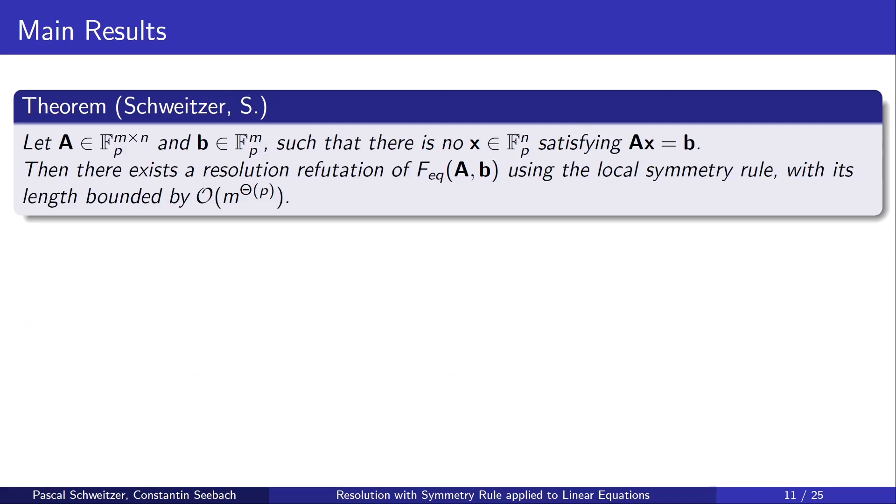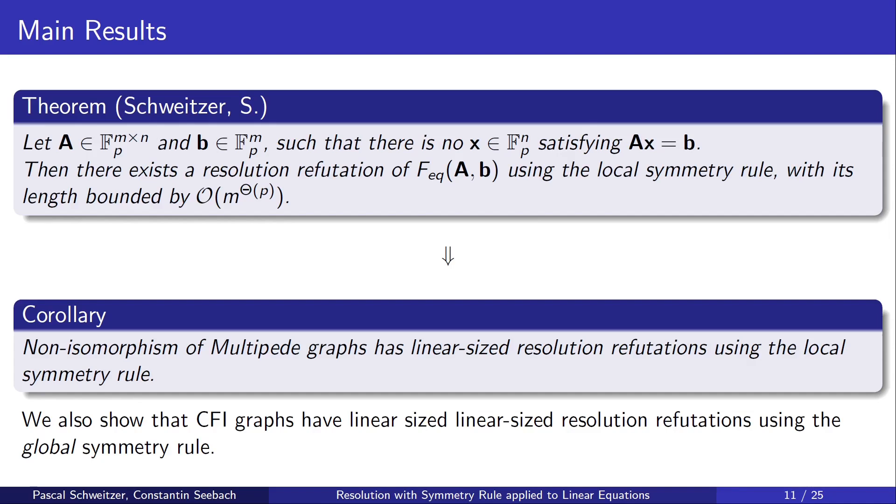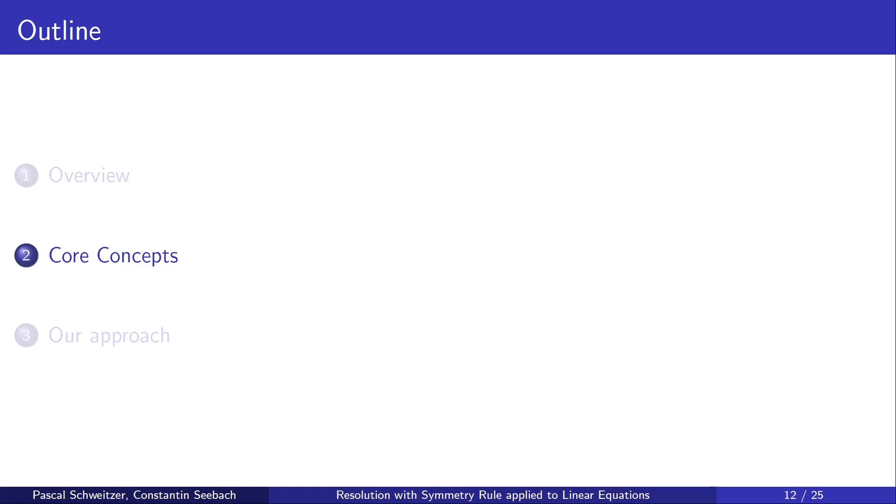Here are our main results. If we are given an unsolvable equation system over the finite field Fp, then we can construct a resolution refutation using the symmetry rule, which proves this fact and its length is bounded by a polynomial in the number of equations. From this, we infer that also non-isomorphism of multipede graphs has linear sized resolution refutations using the local symmetry rule. Additionally, we show that the CFI graphs have linear sized resolution refutations using the global symmetry rule.